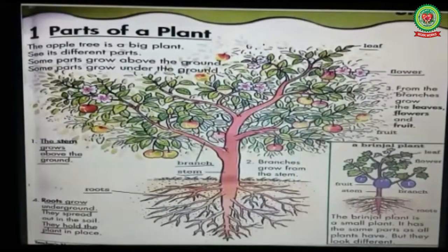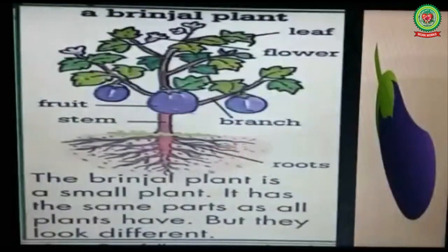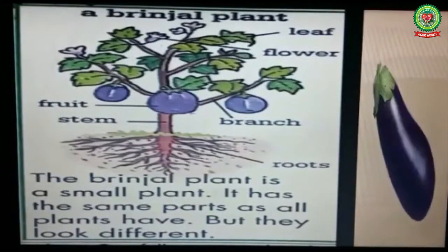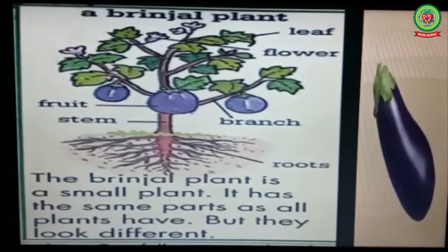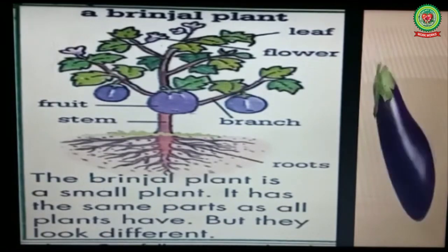Now, children, as you can see a brinjal plant given in your book. It has different parts like roots, stem, branch, fruit, flower, and leaf. The brinjal plant is a small plant. Look at this brinjal plant — it is small in size compared to an apple tree. It has the same parts as all plants have, as you can see in the picture.